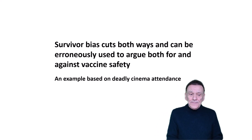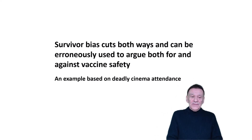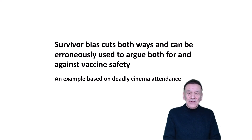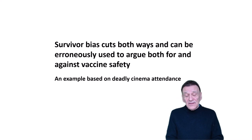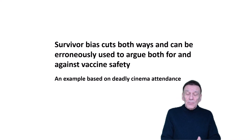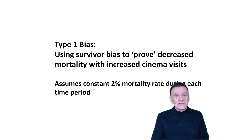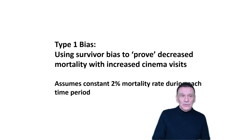Should you believe the conclusion? Well, I'm going to show you there are two different types of survivor bias which, by suitable manipulation of the statistics, can be used to show both increases or decreases in mortality rates the more cinema visits that are made. The first type of survivor bias enables you to prove that you get decreased mortality with increased cinema visits — so basically visiting the cinema is kind of good for your health.